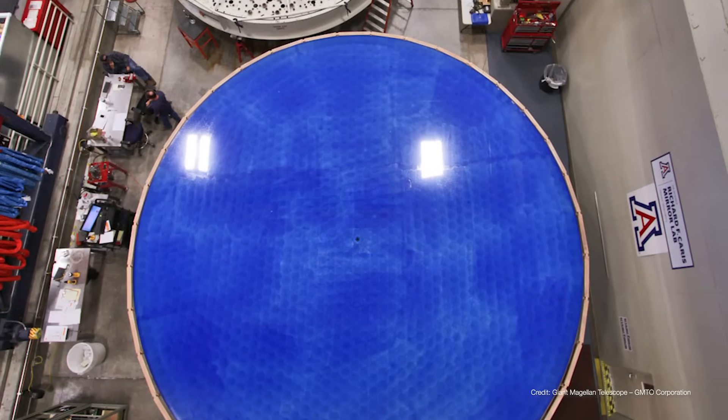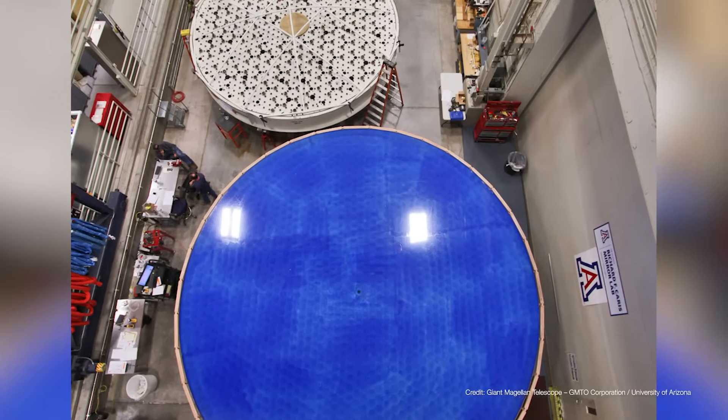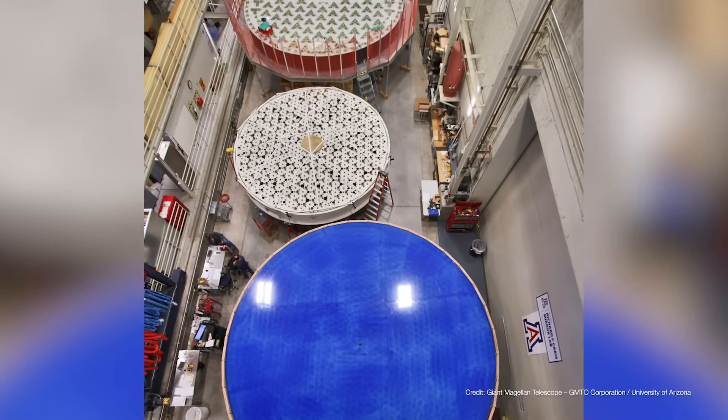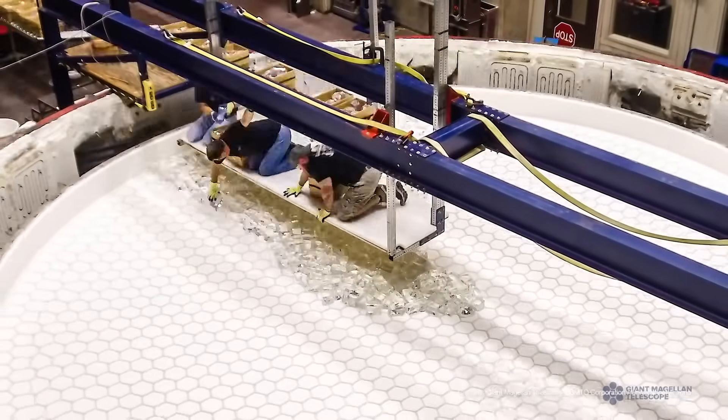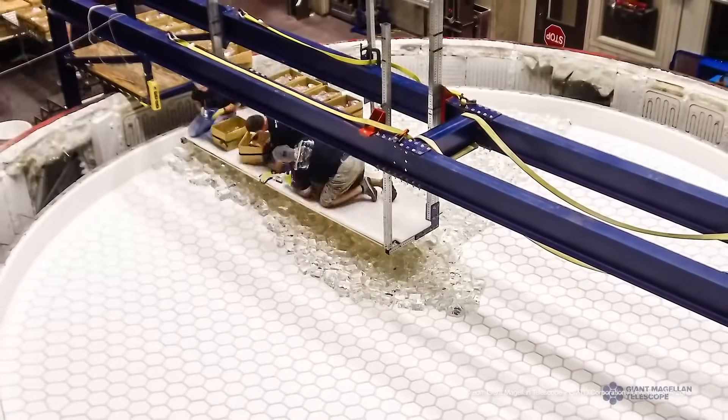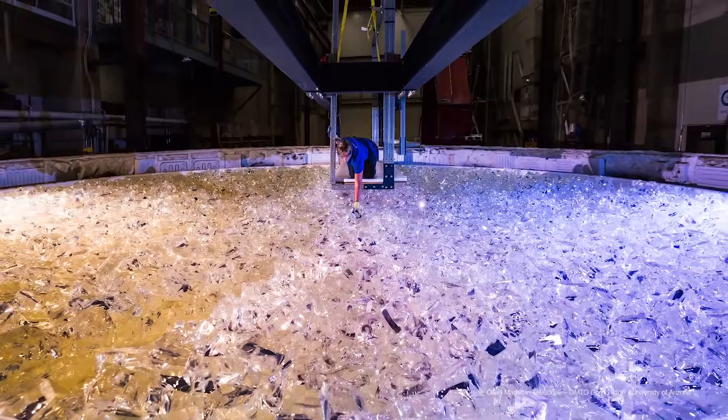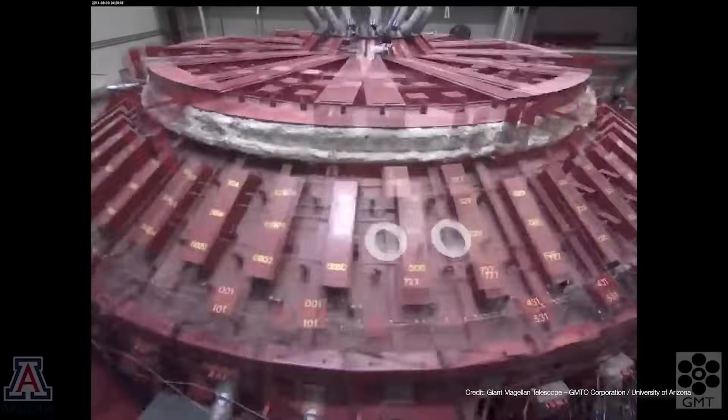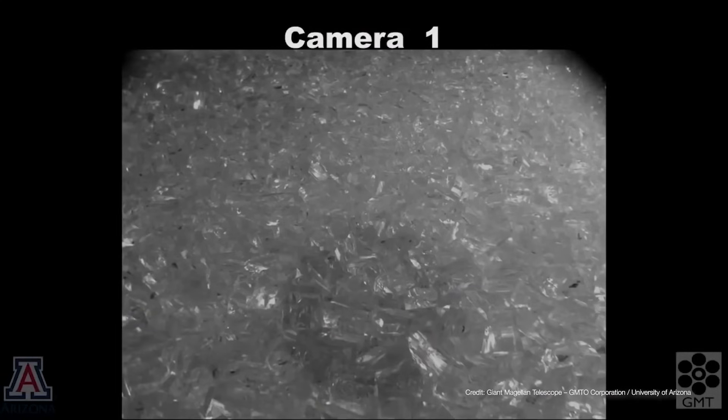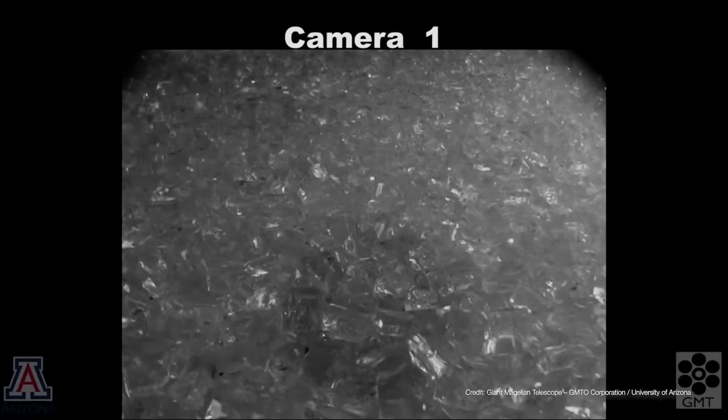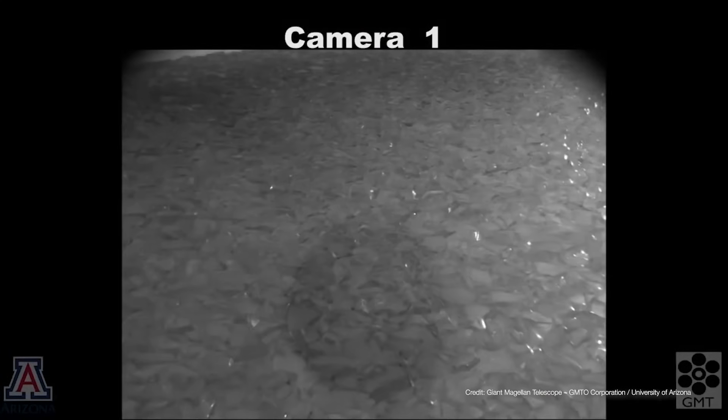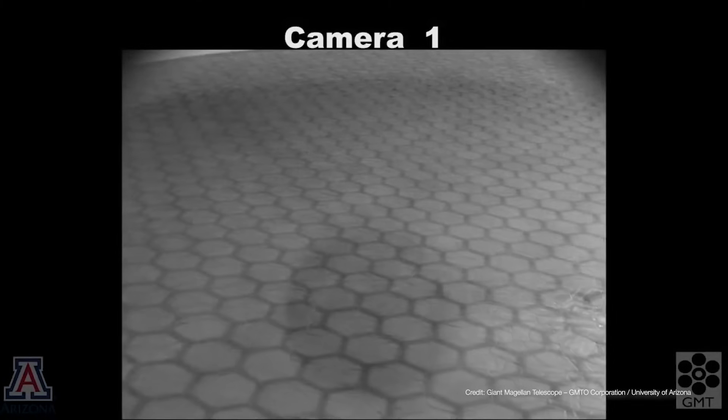The mirrors are built at the Richard F. Karras Mirror Lab at the University of Arizona. A special low expansion borosilicate glass is placed into a honeycomb mold. The glass and mold are then enclosed in an electric oven. The glass is heated to 1200 degrees Celsius and melts into the mold. While the glass is molten, the furnace spins to give the glass its desired parabolic shape. The glass is then cooled very slowly at a rate of 3 degrees Celsius every day over a three-month period.